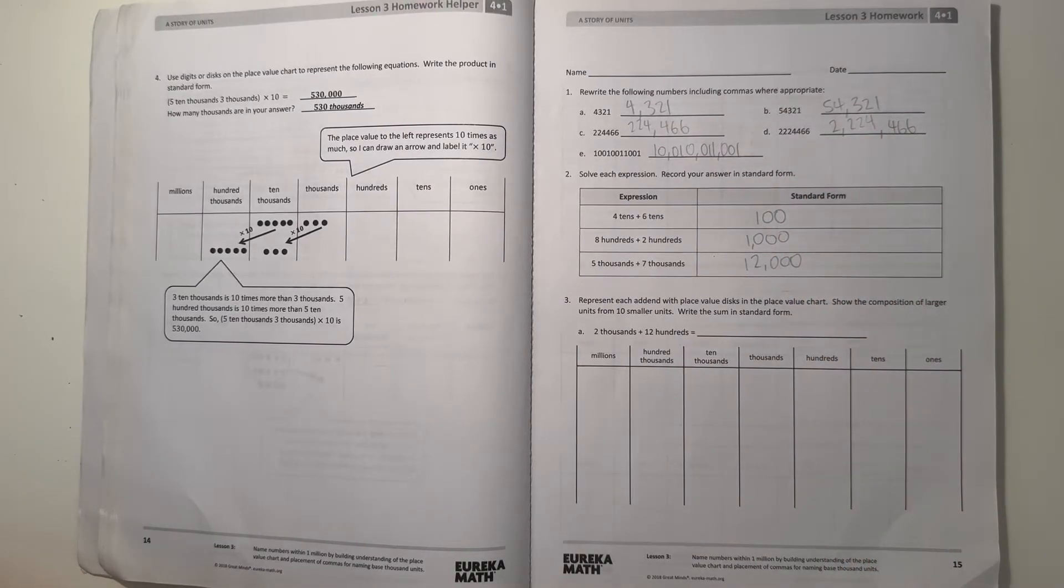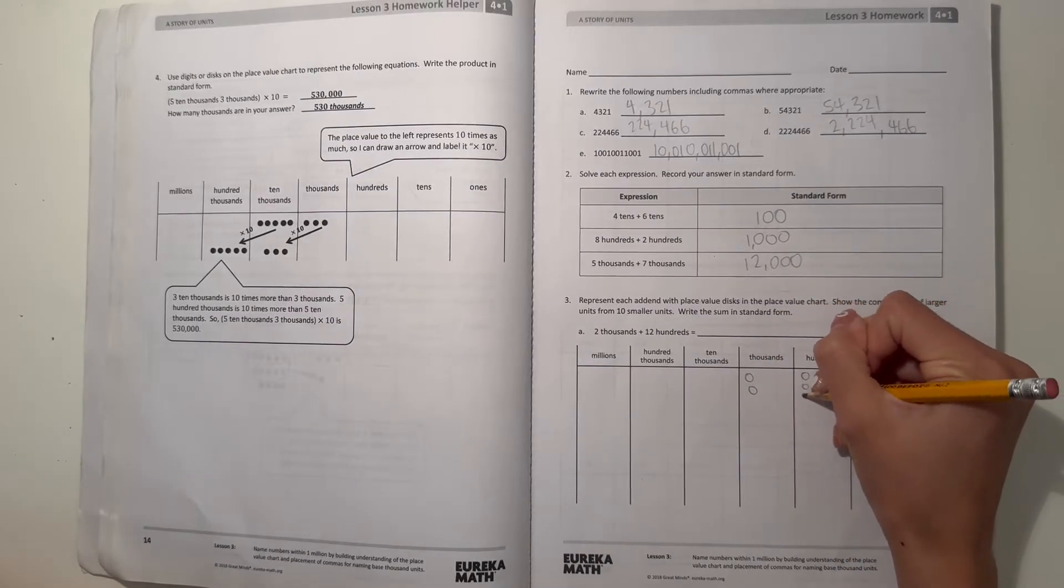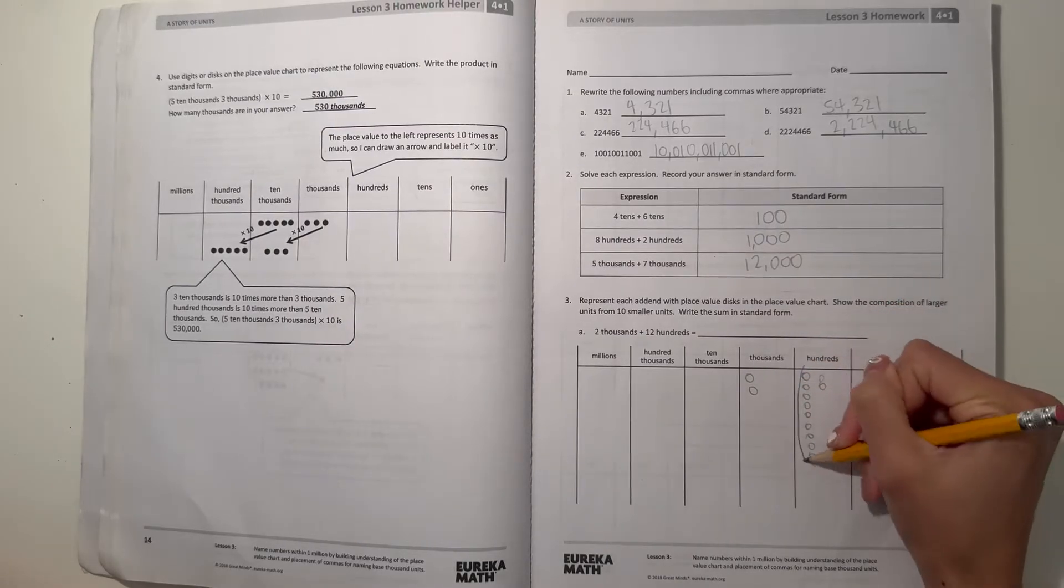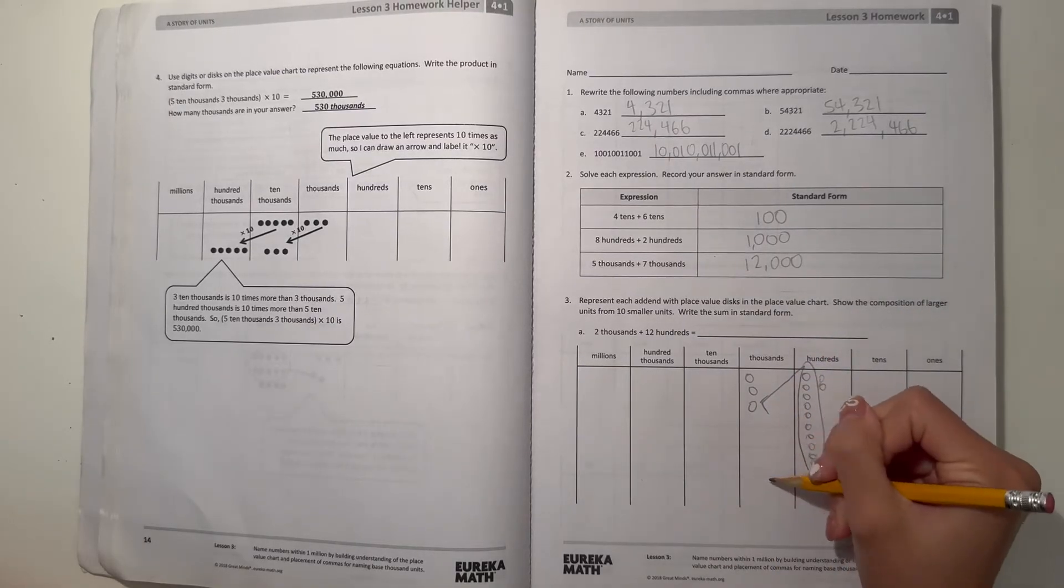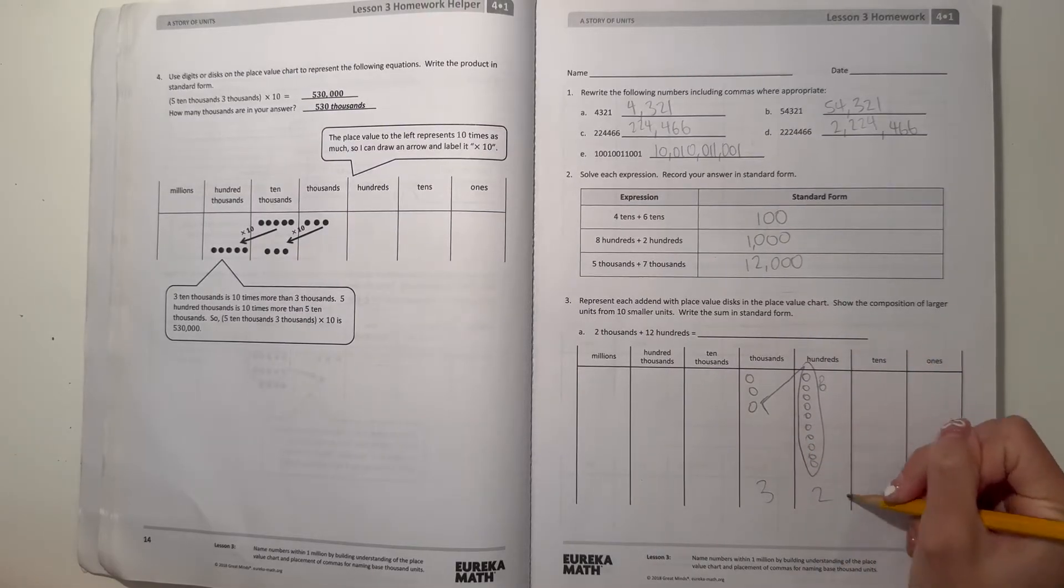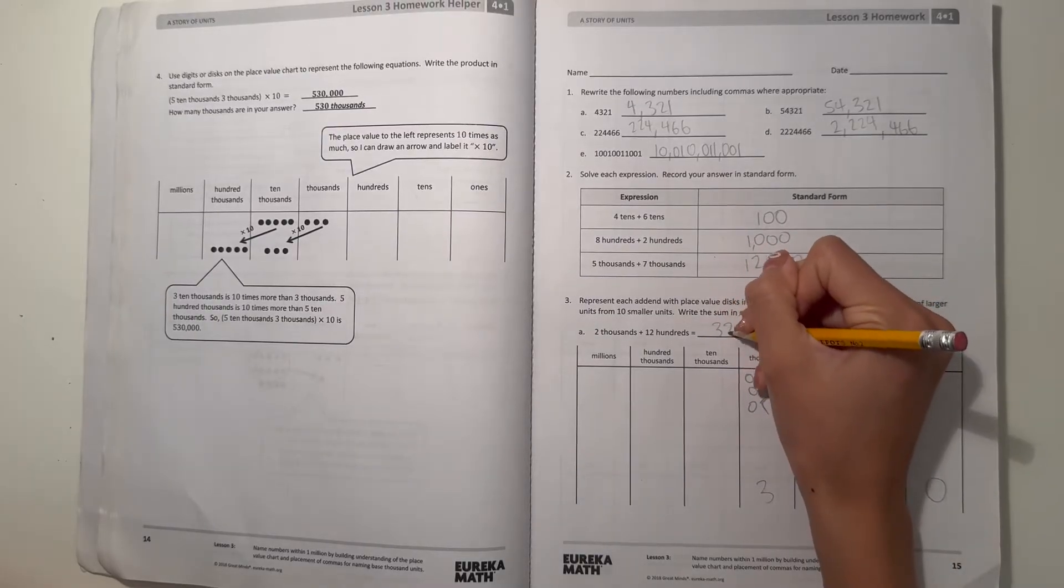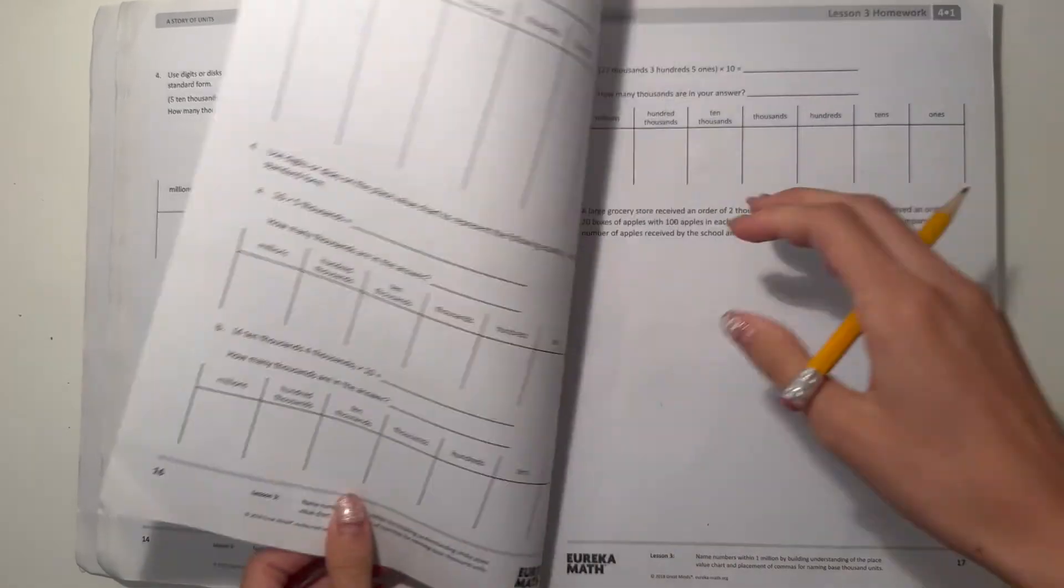Number 3. Represent each addition with place value disks in the place value chart. Record the composition of larger units from 10 smaller units. Write this one in standard form. So first we have 2 thousands, so the thousands, we have 2 thousands and 12 hundreds. So we have 10 here, a group of 10 here, and then we can go into the next place value. So now we have 3,000, 3,200. So then our answer here would be 3,200, with the comma after the 3.